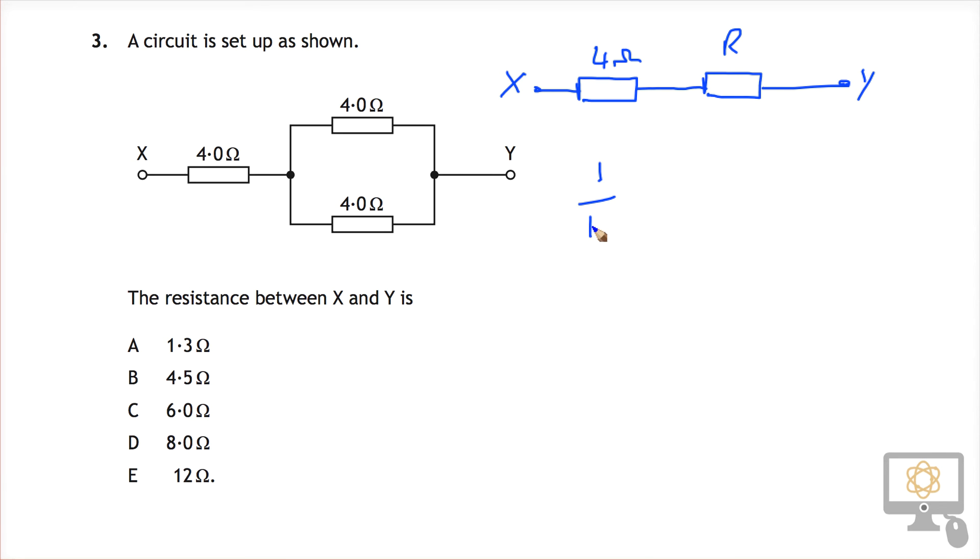The first way is to use the formula for total resistance: 1 over RT is 1 over R1 plus 1 over R2. And then we fill in the numbers, and that's 1 over 4 plus 1 over 4 is equal to 1 over RT.